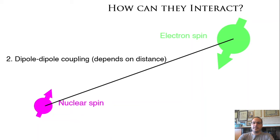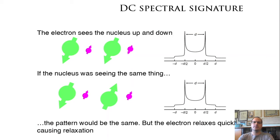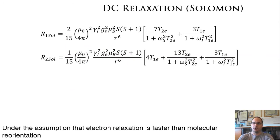They can also interact dipolarly, depending on the third power of the distance. You could expect that the electron sees the nucleus up and down in different orientations with respect to the magnetic field corresponding to the Pake doublet, and the nucleus would sense exactly the same thing. However, again, the electron relaxes quickly, and therefore we have a relaxation which is called the Solomon relaxation.